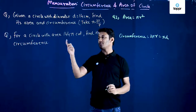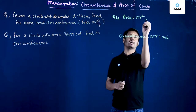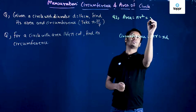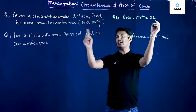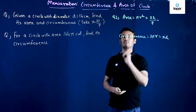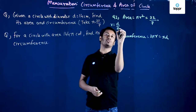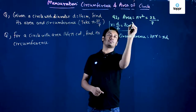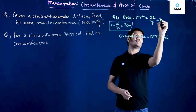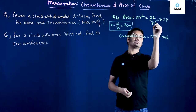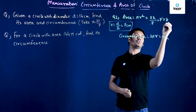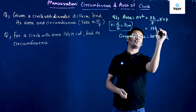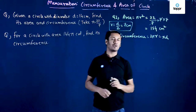The diameter of the circle is given as 14 cm. To find the area, I use πr². Taking pi as 22/7, and since diameter is 14 cm, radius r is diameter divided by 2, which is 7 cm. So area = (22/7) × 7² = (22/7) × 49. The 7 cancels out, giving 22 × 7 = 154 cm². That is the area of the given circle.